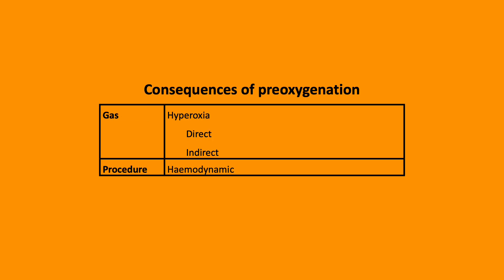The consequences of pre-oxygenation are twofold: the gas effects and the procedural effects. The procedural effects can lead to hemodynamic compromise through the application of CPAP. The gas effects relate to hypoxemia and can be direct — including hypoxic pulmonary vasoconstriction, reabsorption atelectasis, and systemic vasoconstriction — or indirect, relating to prolonged exposure and thus worse outcomes in MI and stroke.